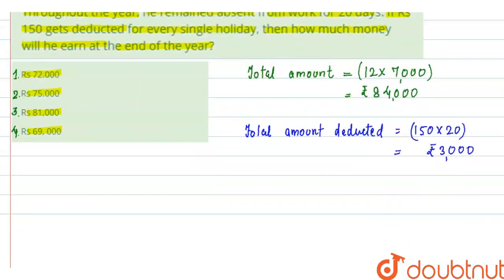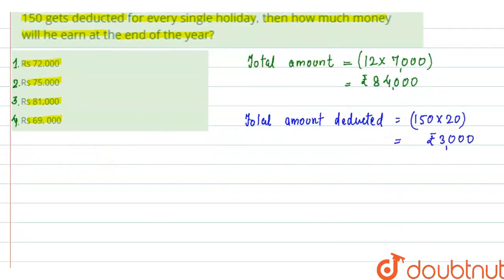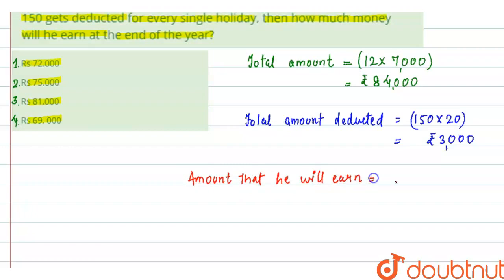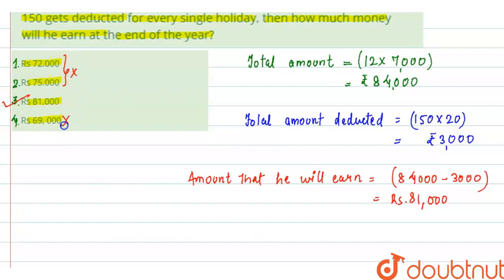So now, the amount that he will earn is Rs. 84,000 minus Rs. 3,000, which is a total of Rs. 81,000. That means our third option is correct, and the rest of the options are incorrect. I hope this is clear. Thank you.